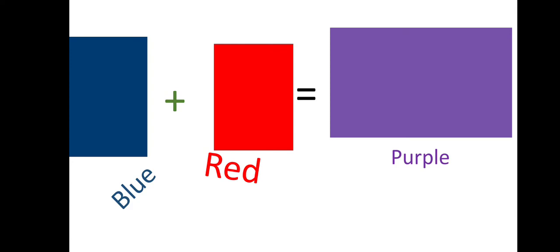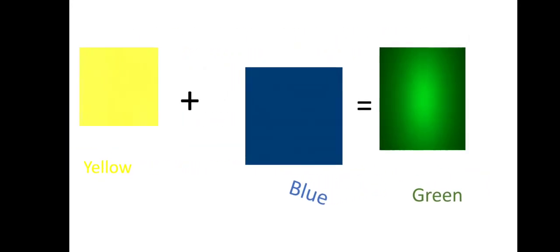Then for us to get purple, we have to mix blue and red. You can see blue, B-L-U-E blue, R-E-D red. So when you mix blue and red color you get purple, as you can see on your phone screen.